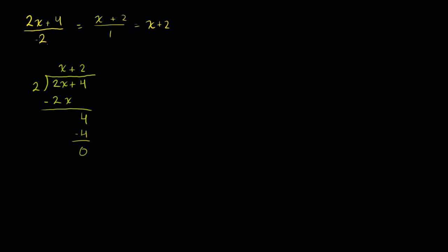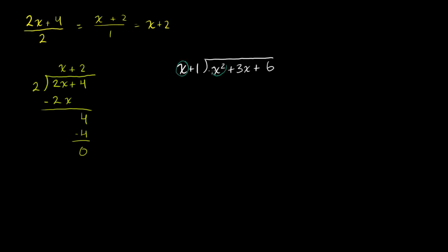This might seem like overkill, but this is a very generalizable process — you can do this for any degree polynomial dividing into any other degree polynomial. So let's say we wanted to divide x plus 1 into x squared plus 3x plus 6. You look at the highest degree term in the divisor, which is x, and the highest degree term in the dividend, which is x squared. You can ignore everything else — that really simplifies the process. x goes into x squared x times. Put it in the x place.